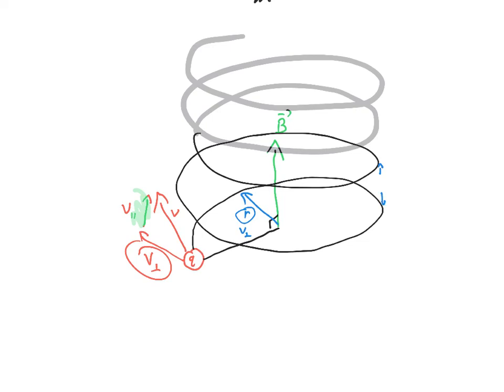And what you can also do is determine how far apart one circle is from the other. And this vertical distance between one point on the circle and the point directly above it on the next circle is called the pitch of that helical path.